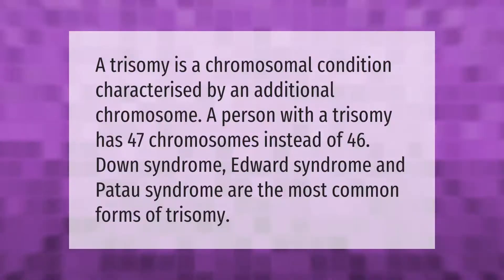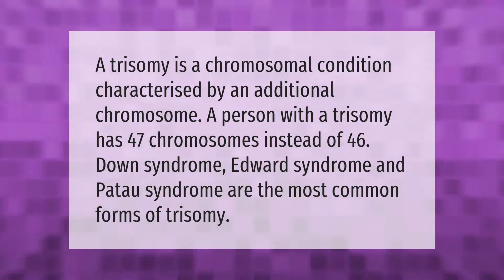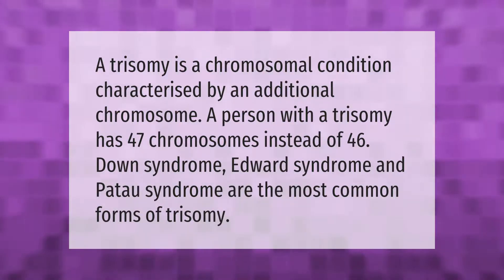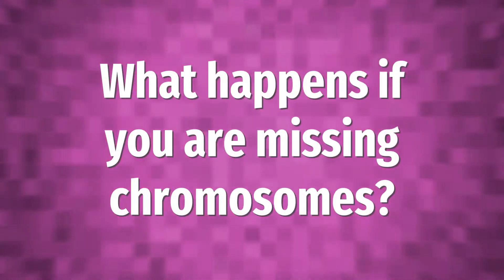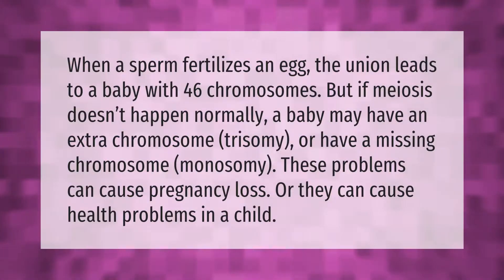A trisomy is a chromosomal condition characterized by an additional chromosome. A person with a trisomy has 47 chromosomes instead of 46. Down syndrome, Edwards syndrome, and Patau syndrome are the most common forms of trisomy. Normally, when a sperm fertilizes an egg, the union leads to a baby with 46 chromosomes.